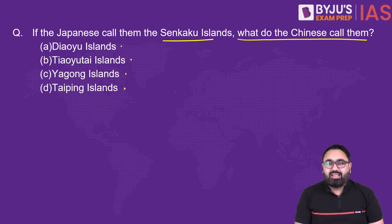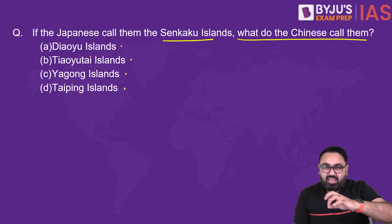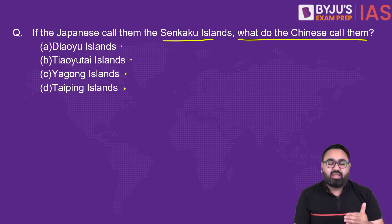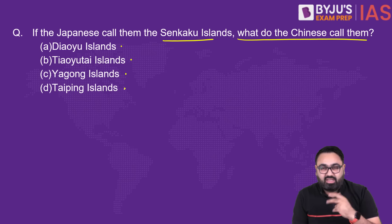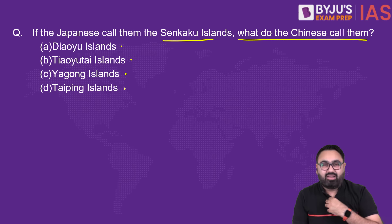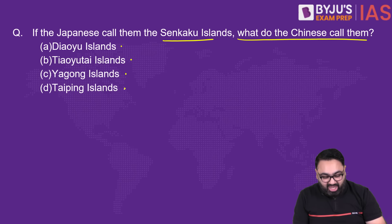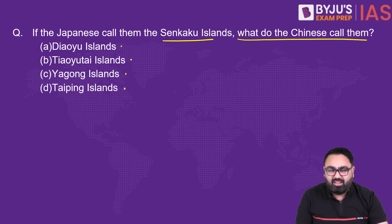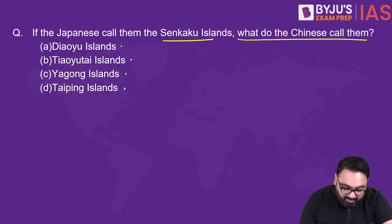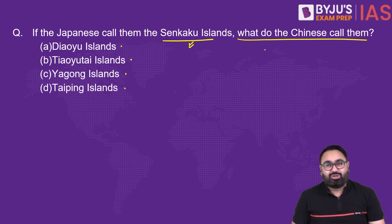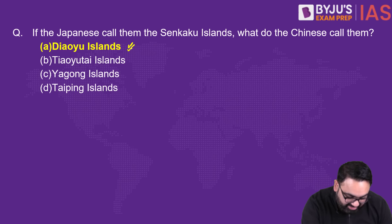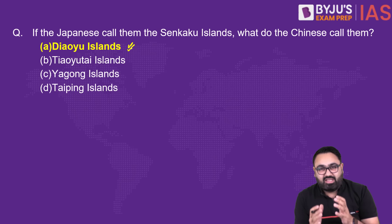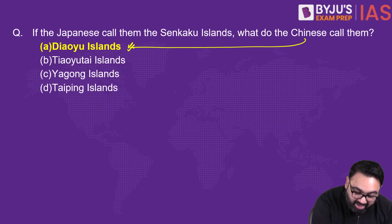For example, you would have seen in the news that China has renamed villages in Arunachal Pradesh — when you rename an area in your own language, you send a signal that it is your territory. Similarly, China and Japan have disputes over these islands, and China has issues with Taiwan as well. The answer is A — the Diaoyu Islands. The Chinese call them by a different name and the Japanese call them by a different name.